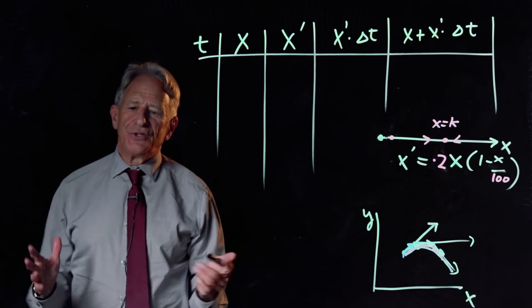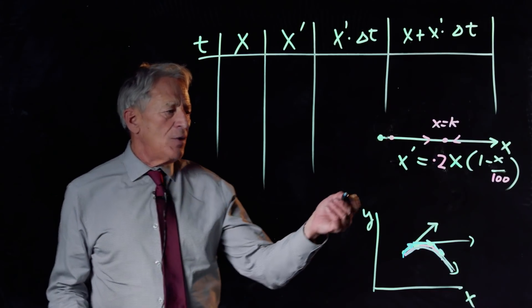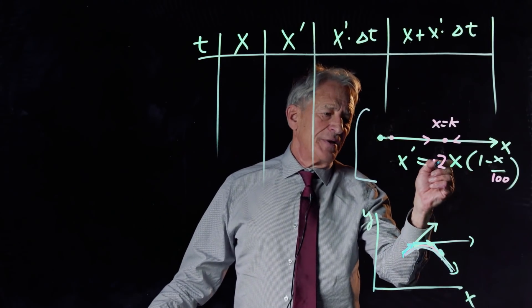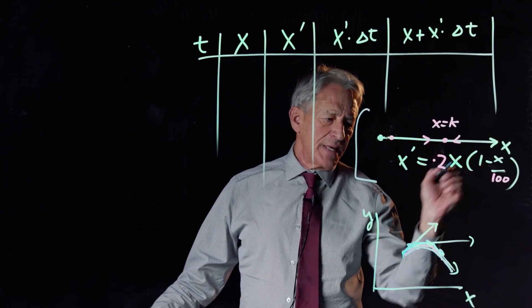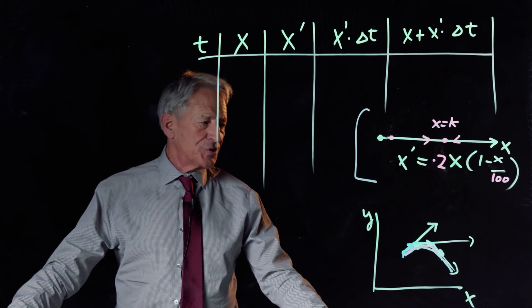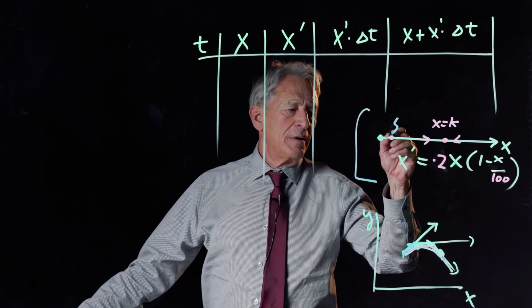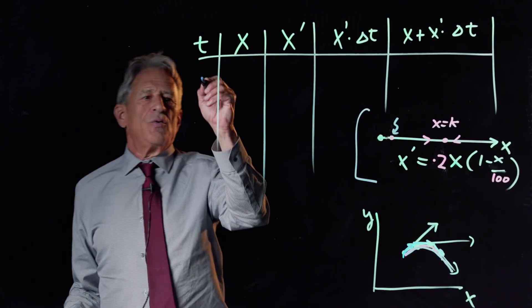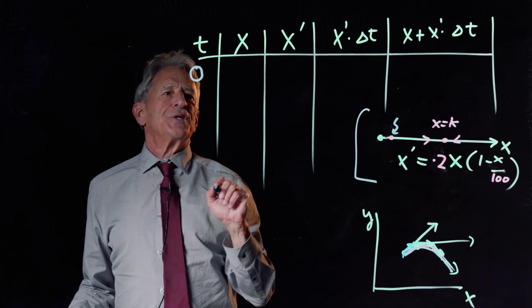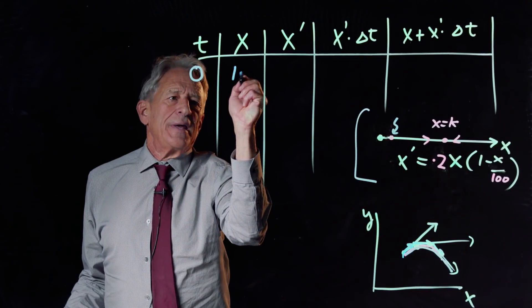So let's actually do an example just to show you how this calculation actually works. So I'm going to take a one dimensional example here. And I put in, instead of using an abstract B and a K, I put in actual numbers for those, which you have to do to get a definite equation. And now I have to also pick an initial condition there. So at time zero, my initial condition, which is going to be X zero. Let's say X is 10.